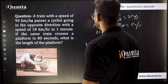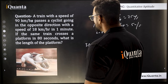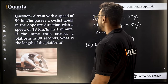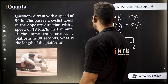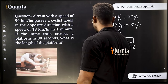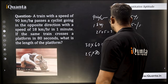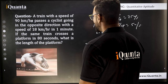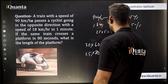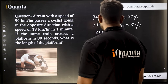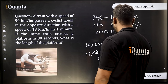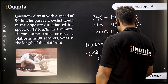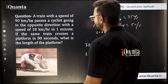The train also crosses a platform in 80 seconds. In 80 seconds, the train travels 25 × 80 = 2000 meters. When crossing a platform, the train covers its own length plus the platform length. So: 1800 + platform length = 2000, which gives platform length = 200 meters.